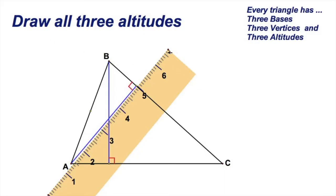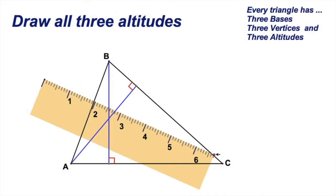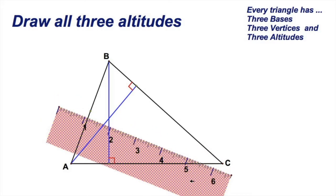Now we're drawing in an altitude. One more and we've got this. So again, let's square it up to the third side. Every triangle has three bases. Every triangle has three altitudes.